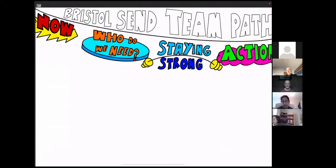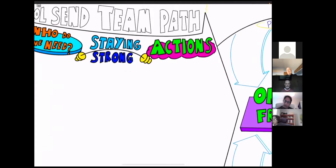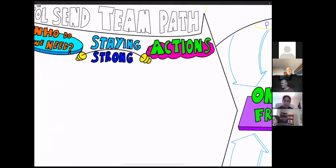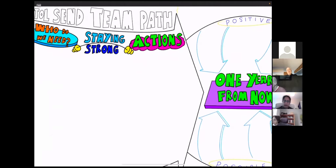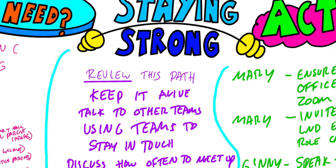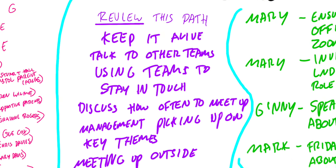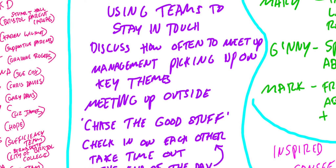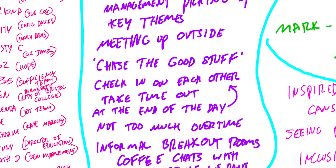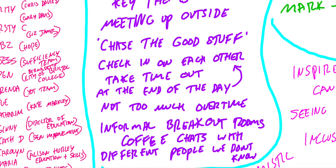Then we're going to look at 'staying strong' — what can we do as a team to make sure we stay on course and on track towards our goals? These are ideas and plans we can think of as a team. As a psychology service, what do you need to help you keep strong in order to get to those positive and possible goals?